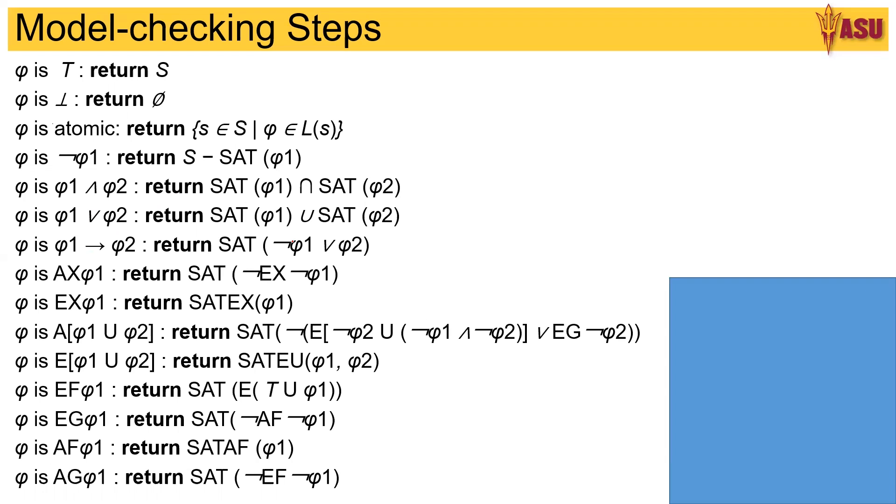For implication, you write it as ¬φ1 ∨ φ2. We try to express A in terms of E as ¬E. So if you're saying along all paths, then we are saying not there exists, there does not exist.